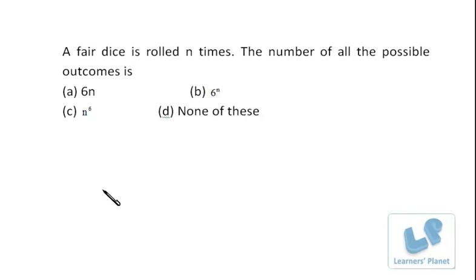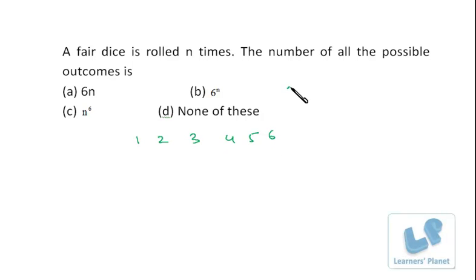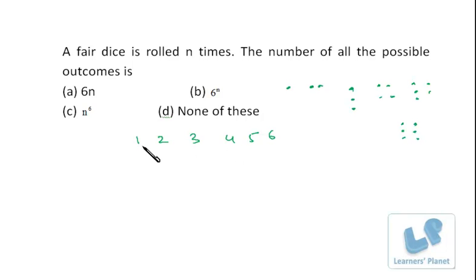A fair dice is totally unbiased — it doesn't follow any pattern for its outcomes. The dice is rolled n times. On a dice there are numbers from one to six, represented as dots: one, two, three, four, five, six. When you roll a dice you may get any one of these numbers. So for the first roll you have six choices.